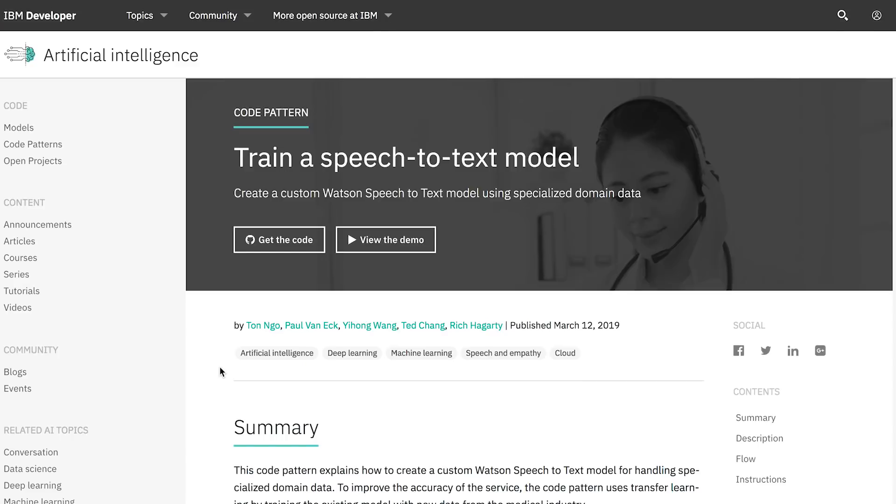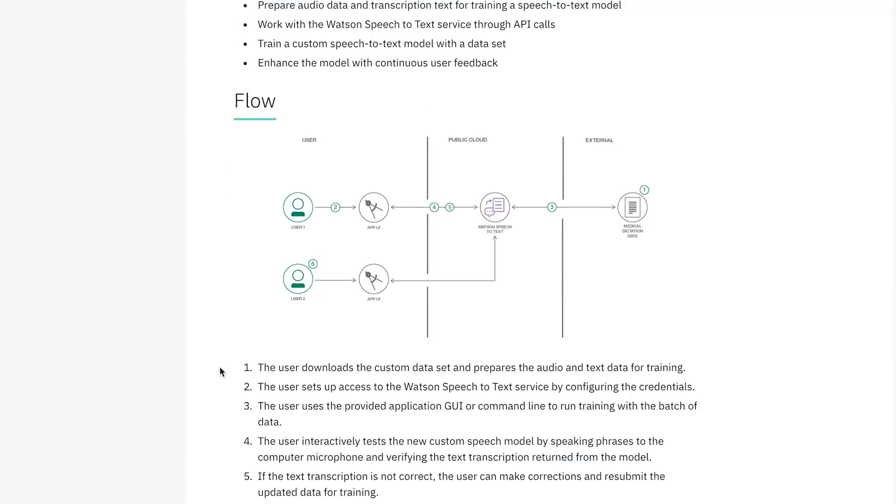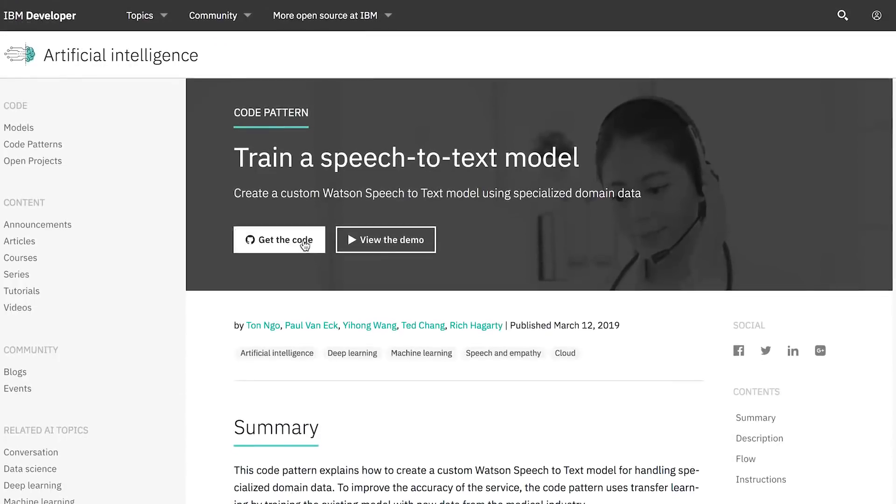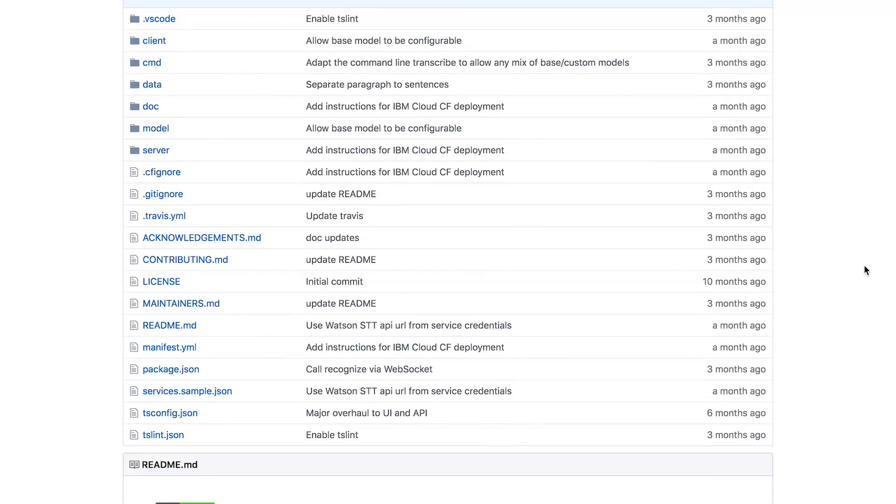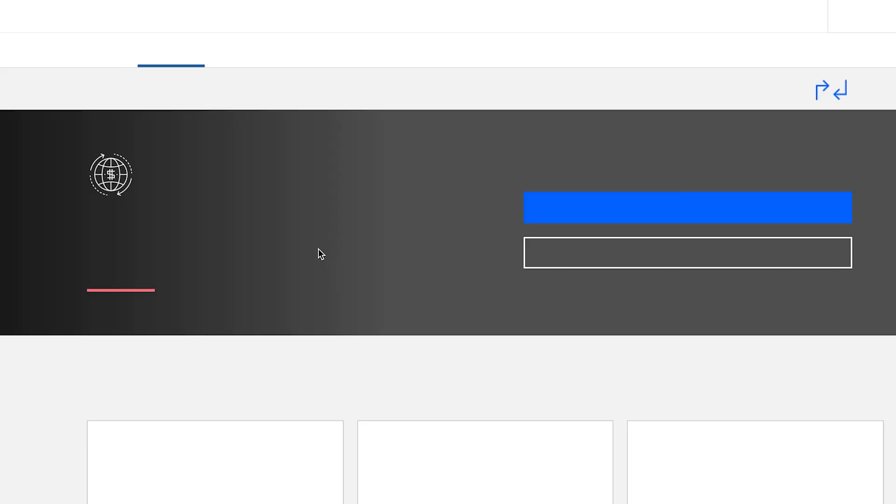To help, IBM has a series of code patterns where it's going to take you through common examples of how these three technologies can be used to solve particular problems. If you want to get some hands-on experience and start figuring out how you can help in natural disasters, go check out these code patterns and get your hands on with these technologies.